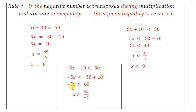When we transpose a negative number during multiplication or division, the sign of the inequality is flipped. So transposing negative 5 to the other side, I flip the inequality sign: x is greater than 60 divided by negative 5. Since 60 divided by 5 is 12, with the negative sign, x is greater than negative 12.